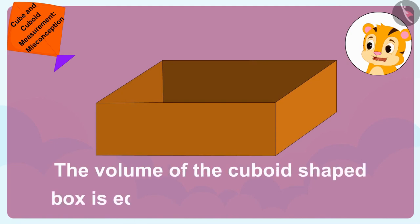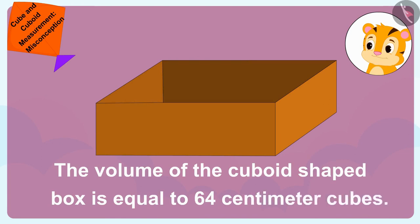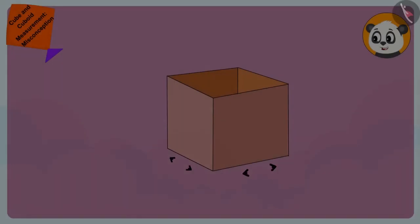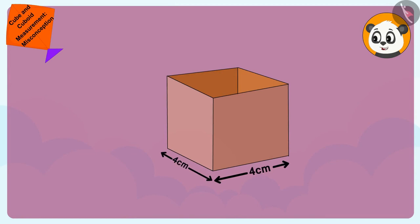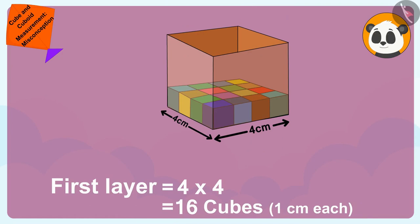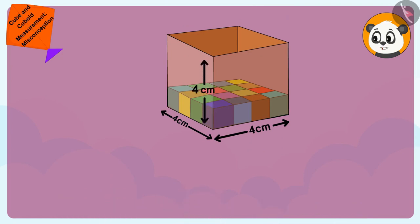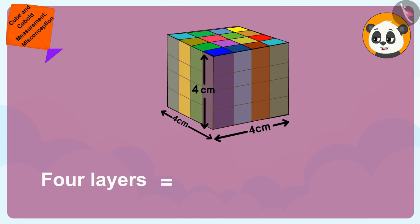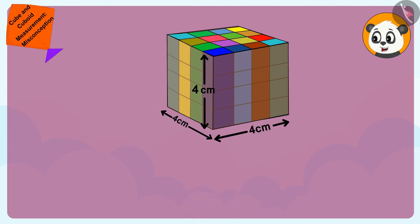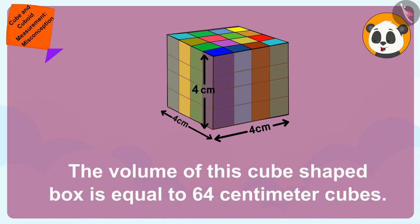The volume of the cuboid shaped box is equal to 64 cm³. Now for the cube shaped box — the sides are 4 cm each. The first layer has 4 times 4, that is 16 cubes of 1 cm each. With 4 such layers, the cube holds 16 times 4, that is 64 cubes. The volume of this cube shaped box is also equal to 64 cm³.